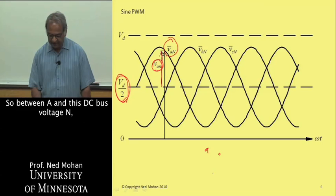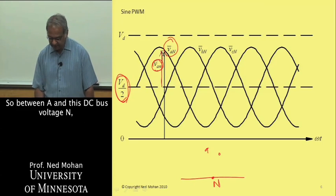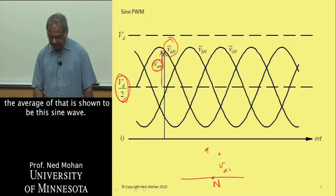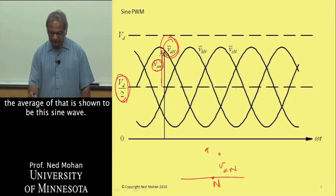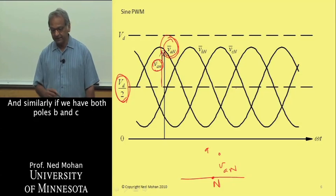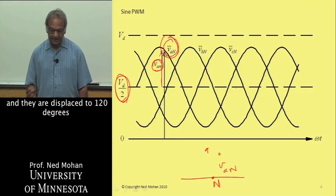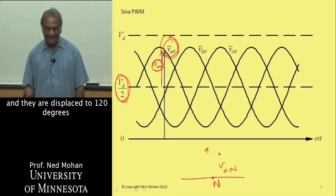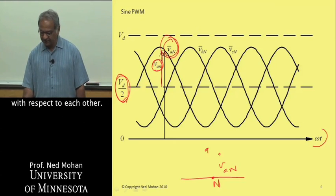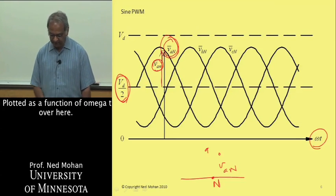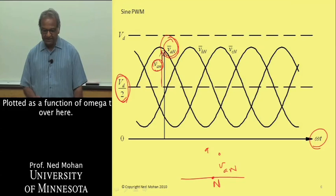Between A and this DC bus voltage N, this voltage VAN, the average is shown to be this sine wave. Similarly, for poles B and C, they are displaced by 120 degrees with respect to each other, plotted as a function of omega T over here.